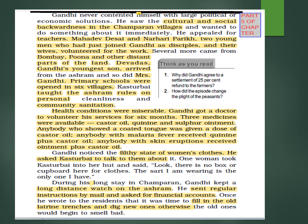Several more came from Bombay, Poona, and other distant parts of the land. Devdas, Gandhi's youngest son, also arrived. Mrs Gandhi also arrived. Primary schools were opened in six villages. Kasturba Gandhi taught the ashram rules on personal cleanliness and community sanitation. Health conditions were miserable; Gandhi got a doctor to volunteer his services for six months.